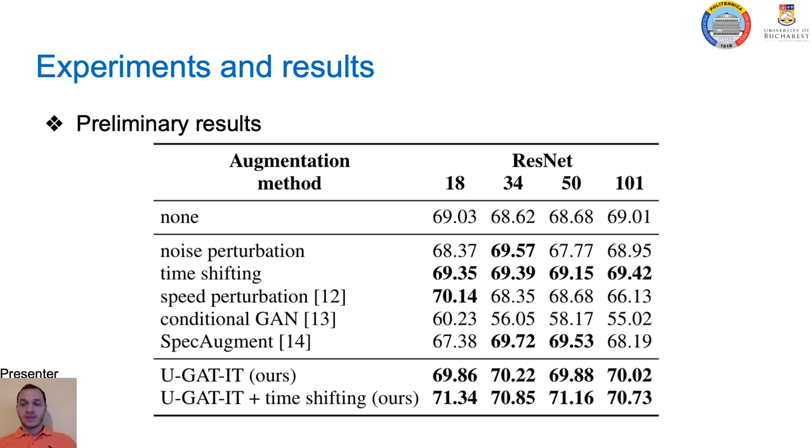Since time-shifting and UGATIT are the only augmentation methods that bring improvement for all ResNet models, we decided to combine them in order to increase our rank in competition. We observe further performance improvements on the development set after combining UGATIT with time-shifting.